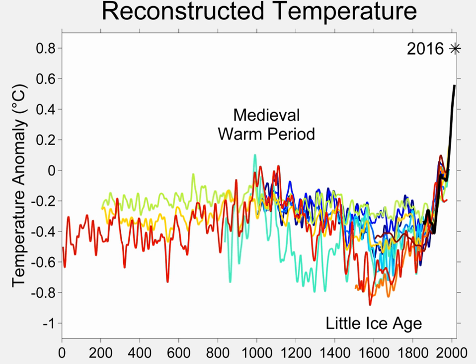Borehole temperatures are used as temperature proxies. Since heat transfer through the ground is slow, temperature measurements at a series of different depths down the borehole, adjusted for the effect of rising heat from inside the Earth, can be inverted — a mathematical formula to solve matrix equations — to produce a non-unique series of surface temperature values. The solution is non-unique because there are multiple possible surface temperature reconstructions that can produce the same borehole temperature profile.